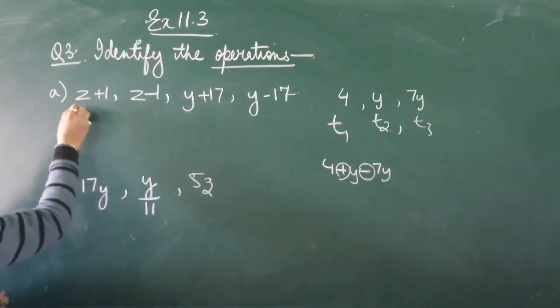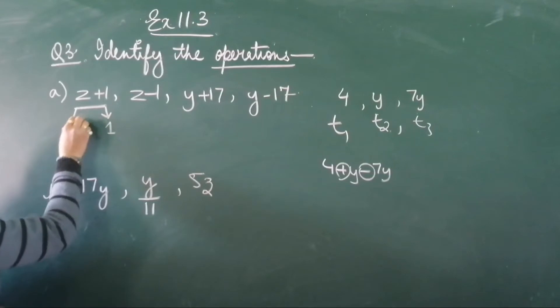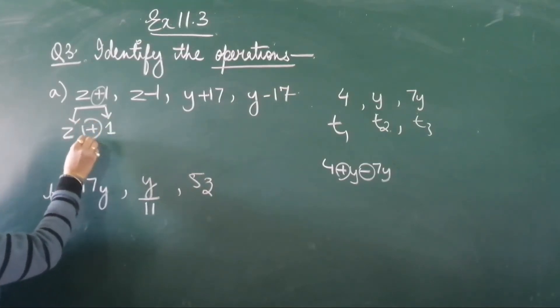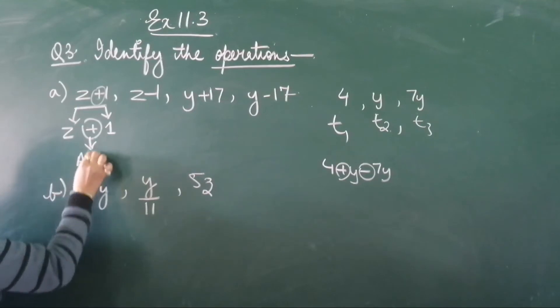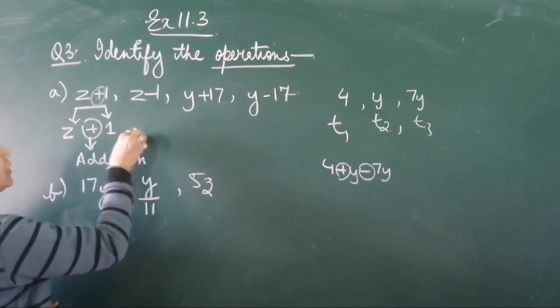Let's take the first one children. Which two terms are here? z and 1. And in between, what they have? They have plus sign. So plus sign is the operator. Which operator? This is used to add, so which is for addition.